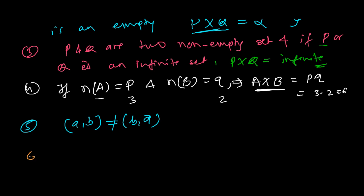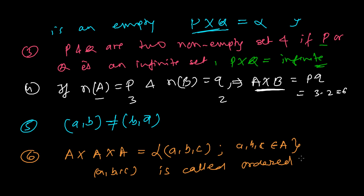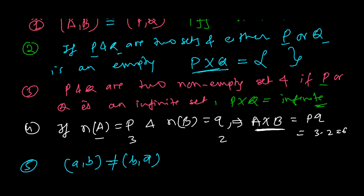The sixth point is about the ordered triplet. Let's say A×A×A—the same set is crossing with itself three times. Then definitely you'll get ordered pairs like (a,b,c), and a, b, c all will belong to A. Then this, (a,b,c), is called an ordered triplet. You remember these things—these are the few things that you need to remember, these six points.